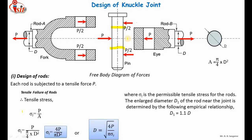The second possibility is crushing failure of the pin inside the eye. If the pin is stronger in shear, there is a possibility of the pin getting crushed inside the eye, or vice versa — the inside diameter of the eye can get crushed. Similarly, the portion of pin inside the fork can also get crushed. So crushing failure of the pin in the eye and in the fork are both possible.